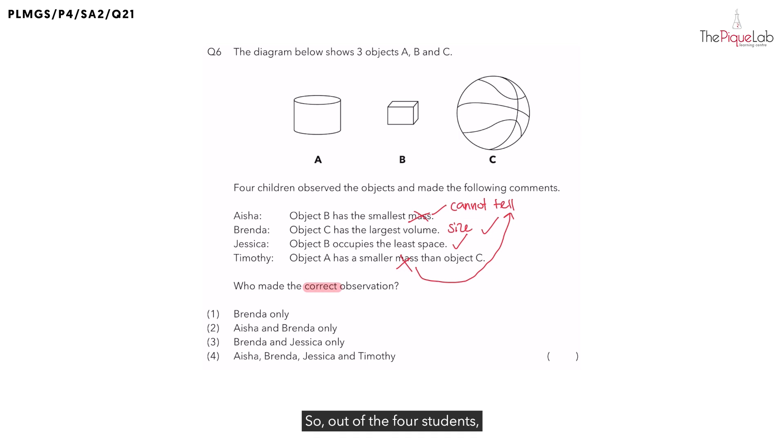So out of the four students, Brenda and Jessica made the correct observations and the correct answer should be 3.